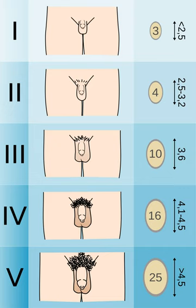Tanner 5, Testicular Volume greater than 20 milliliters, adult scrotum and penis, 14+.